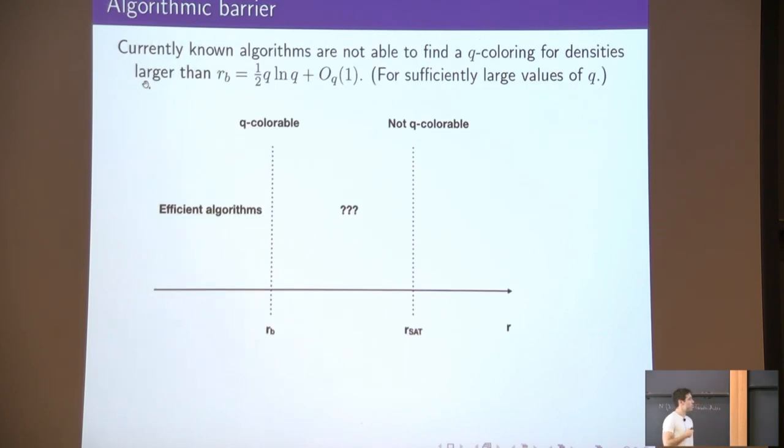If we care about algorithms, there is this bizarre phenomenon that takes place, which basically says that all the algorithms we know stop working at a density way below the satisfiability threshold, basically one half of the threshold. And this is a phenomenon that has been noticed and well studied in the area. It turns out it's not a coincidence.